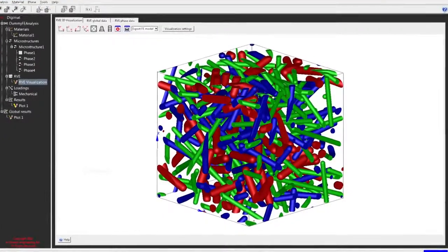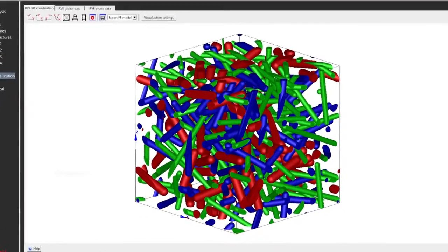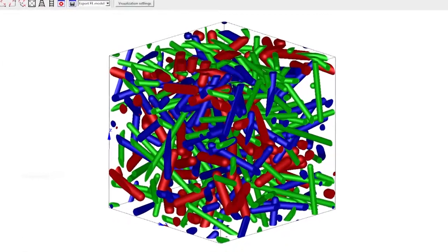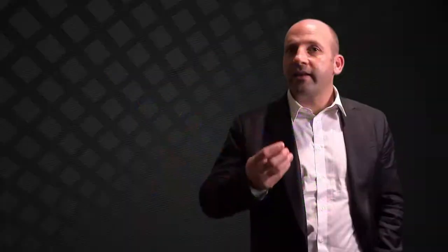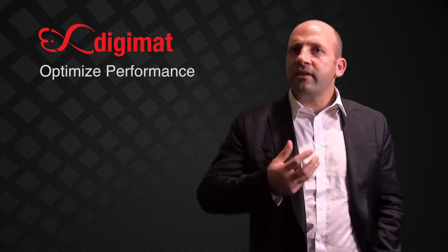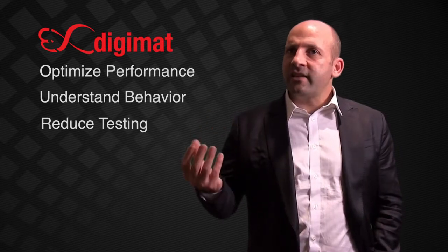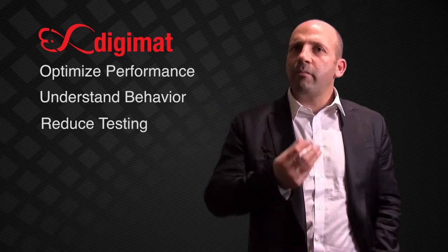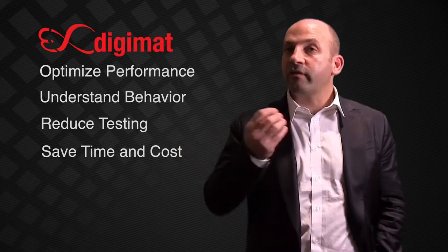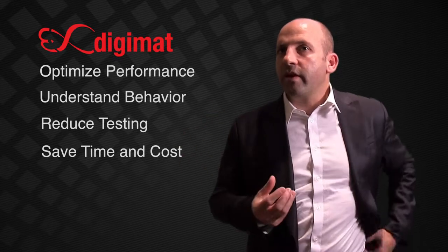Digimat is used by material engineers and by structural engineers. For material engineers, Digimat has to be looked at as a material test lab. It can help you optimize the new material, engineer it, optimize its performance, and understand its behavior. It allows you to reduce the amount of testing that is needed for a material, and the amount of time and cost this testing requires.